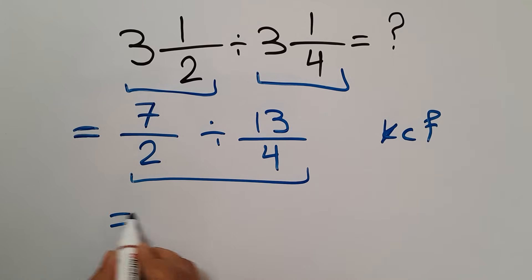7 times 2 gives us 14. So 14 over 1 times 13, which equals 14 over 13.